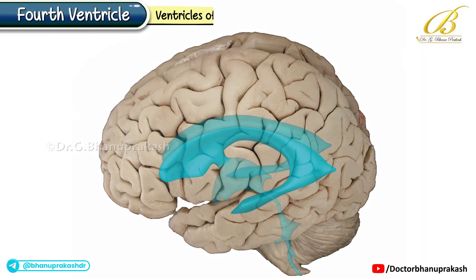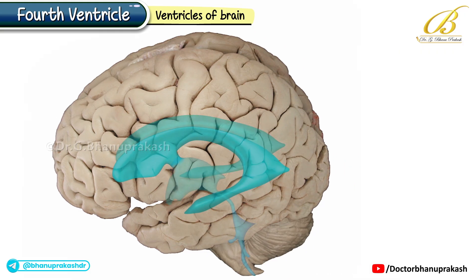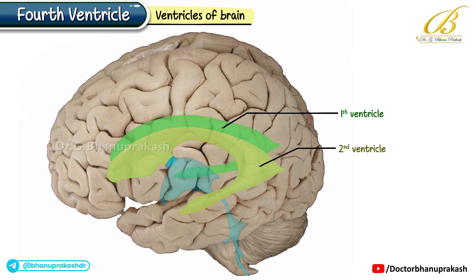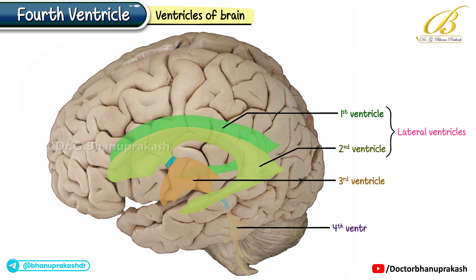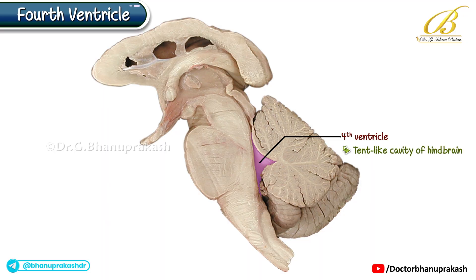Fourth ventricle — ventricles of the brain. We look into the four cavities constituting the brain's ventricular system. The first and second ventricles, commonly known as the lateral ventricles, are positioned in each cerebral hemisphere. The third ventricle is a medially situated cavity sandwiched between the cerebral hemispheres. Lastly, we have the fourth ventricle, located at the level of the brain stem. This image brings us to the tent-like cavity of the hindbrain — the fourth ventricle.